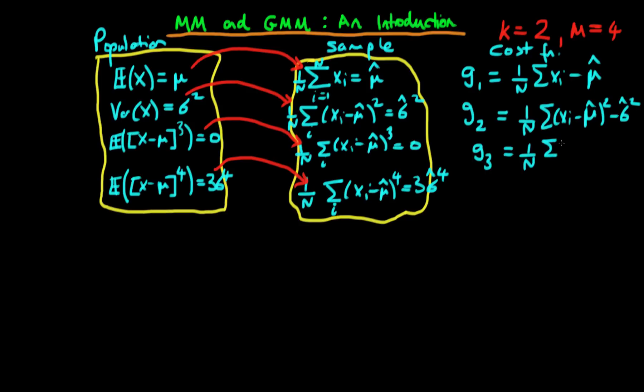And notice that in each of these cases, in g1, g2, g3, and g4, it should actually be the case that if these actual moment conditions were satisfied perfectly, then each of these particular functions should take on a value of zero.